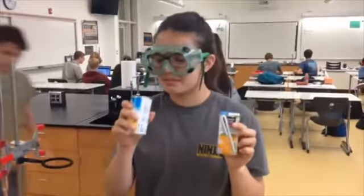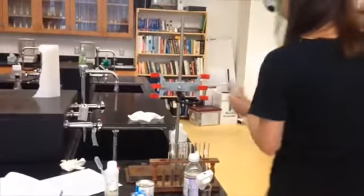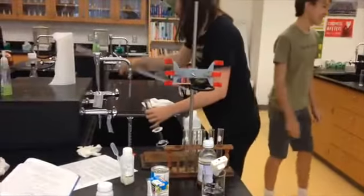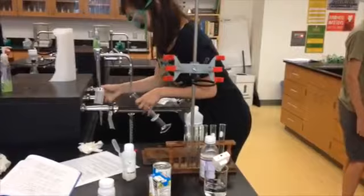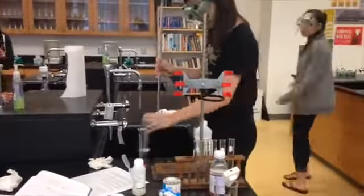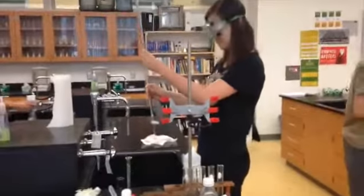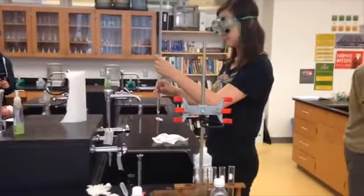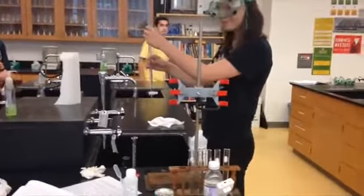Once you're done with your first titration, repeat the process with the other two juices. Once you're done with the titrations, it is important to clean up your lab station properly. Carefully and thoroughly rinse your burette and the rest of the glassware. Then make sure all of your materials are back in their proper spots.